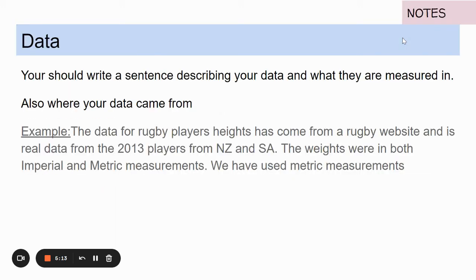When we write about our data we're just saying where has it come from. The data for rugby players heights has come from a rugby website and is real data for the 2013 players from New Zealand and South Africa. The weights, which should say heights, were in both imperial and metric measurements and we have used the metric measurements.